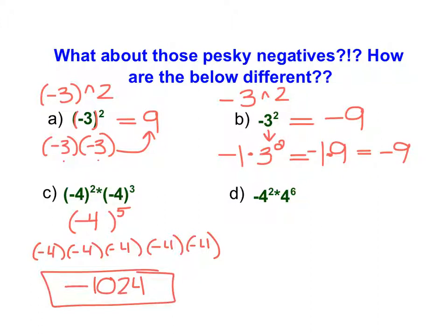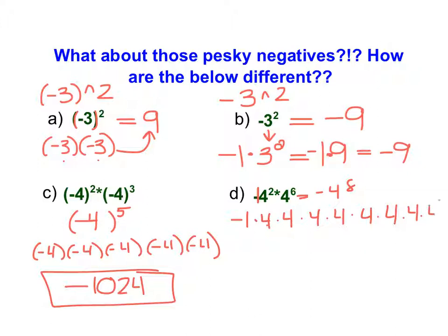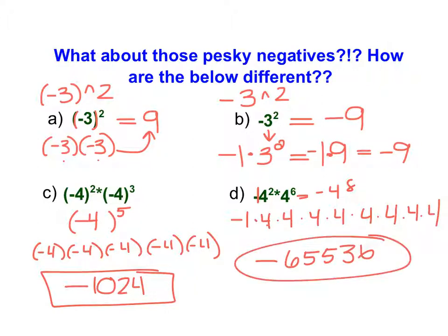Finally, looking at an example without parentheses, remember that the negative out in front is really negative 1 times 4 to the 8th. So 4 multiplied by itself 8 times gives us 65,536, and with the negative 1 multiplied in, we get negative 65,536. So be careful with negatives.